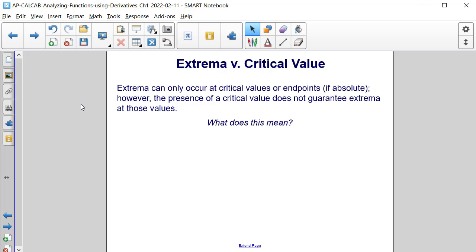Extrema can only occur at critical values or endpoints if absolute. However, the presence of a critical value does not always guarantee extrema at those values. What does this mean?